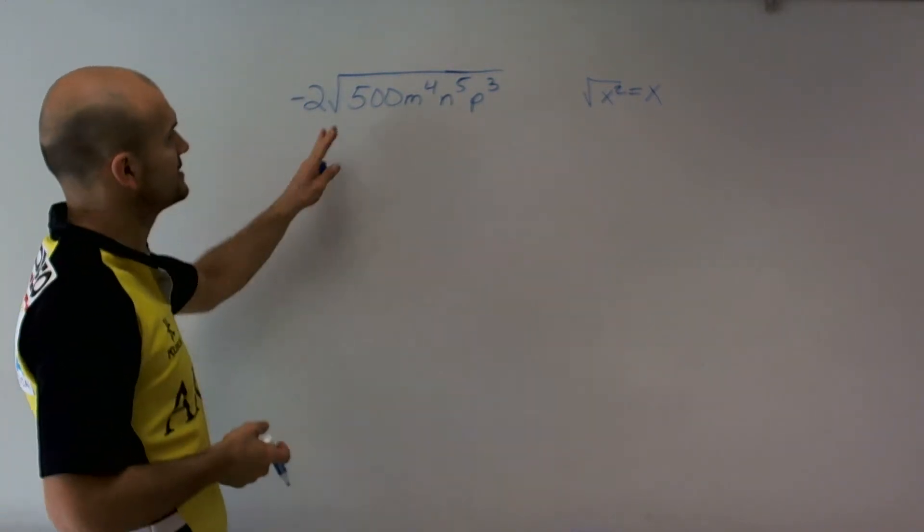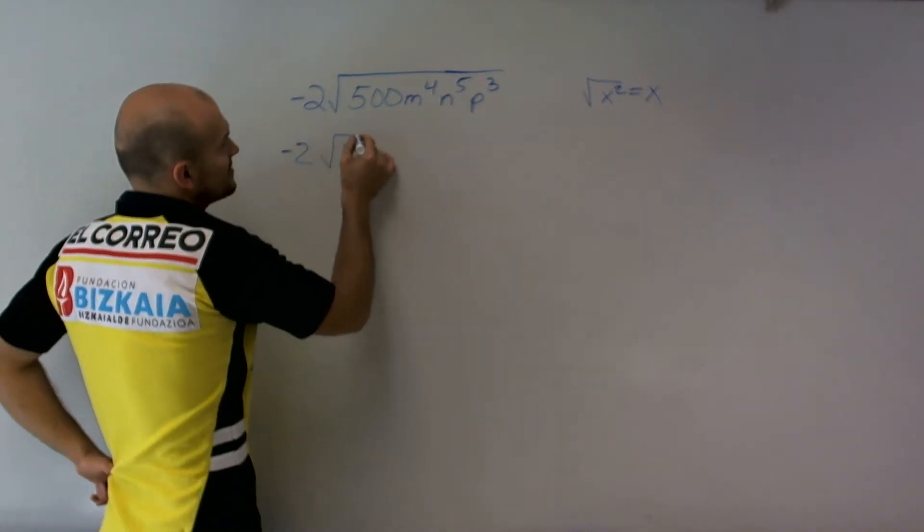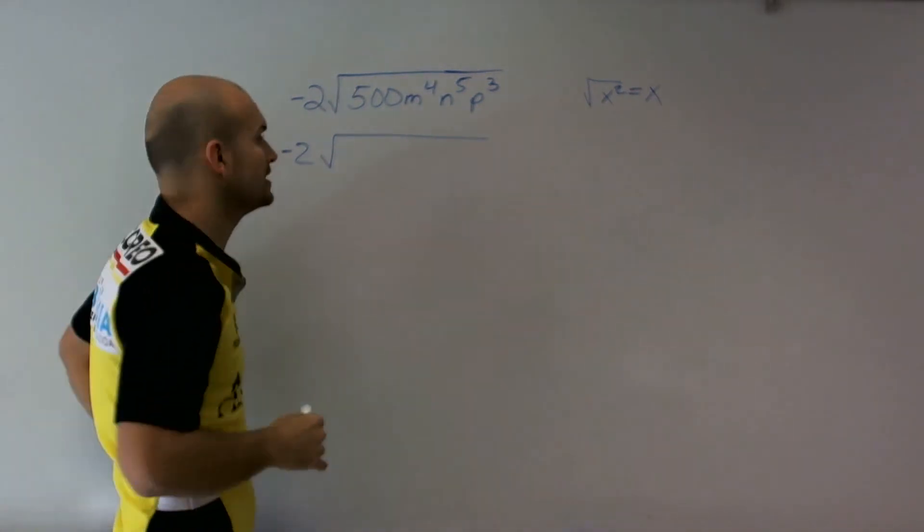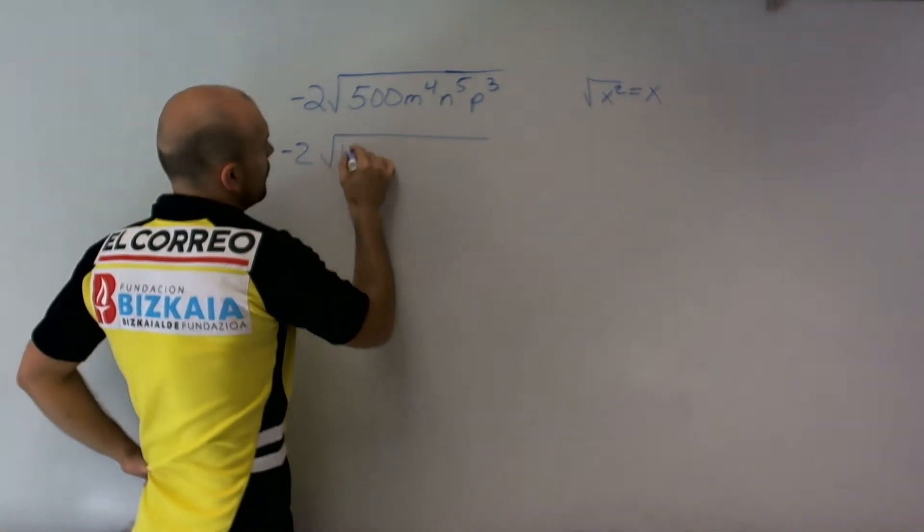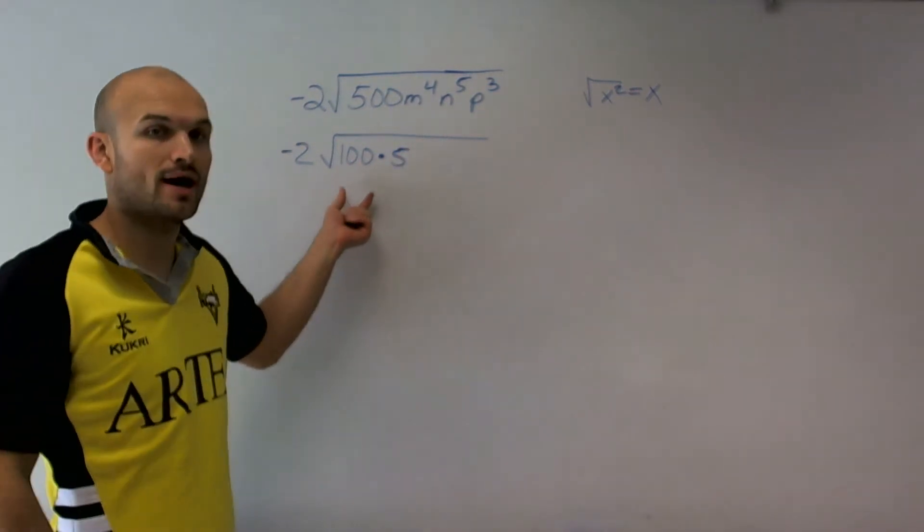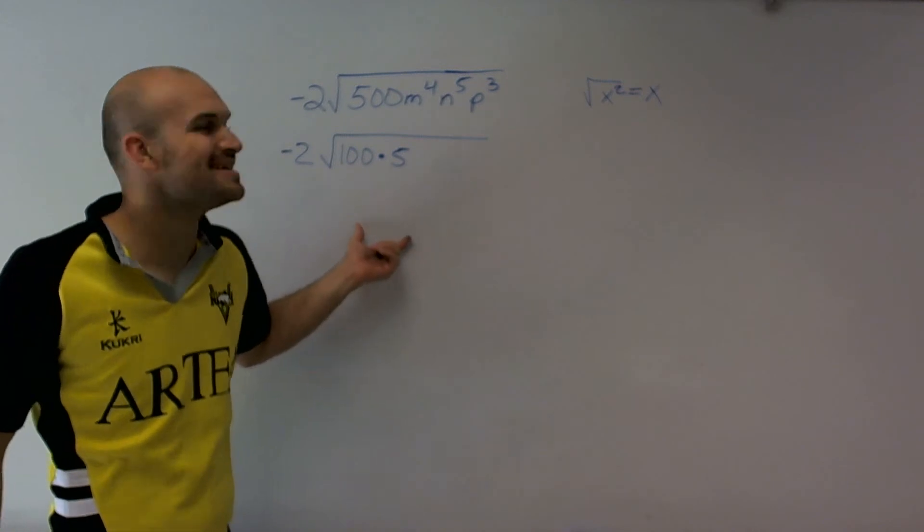So what I have here is, if I do negative 2 times, I can rewrite 500 as 100 times 5. And I know 100 is a square number because that's 10 times 10.